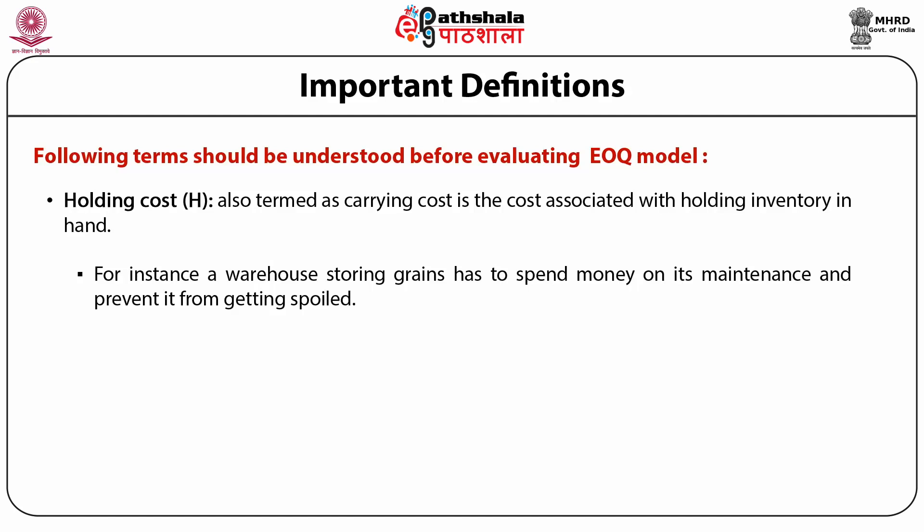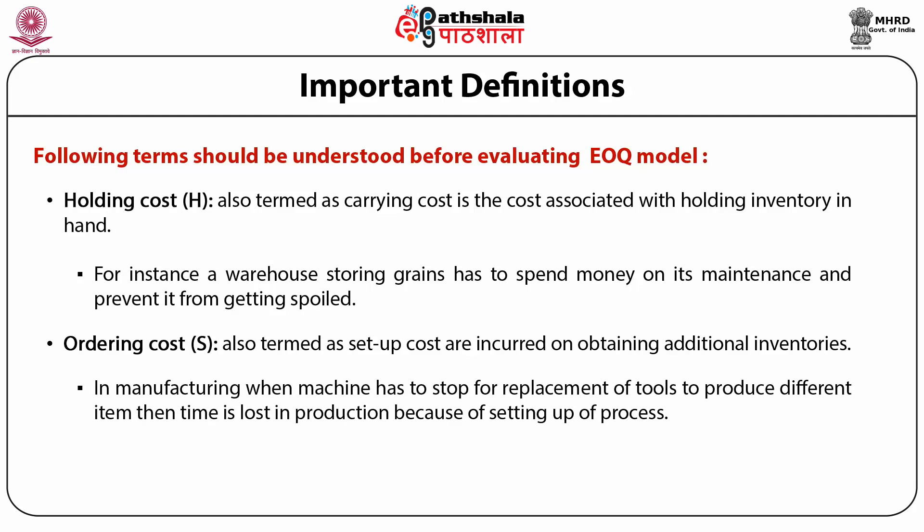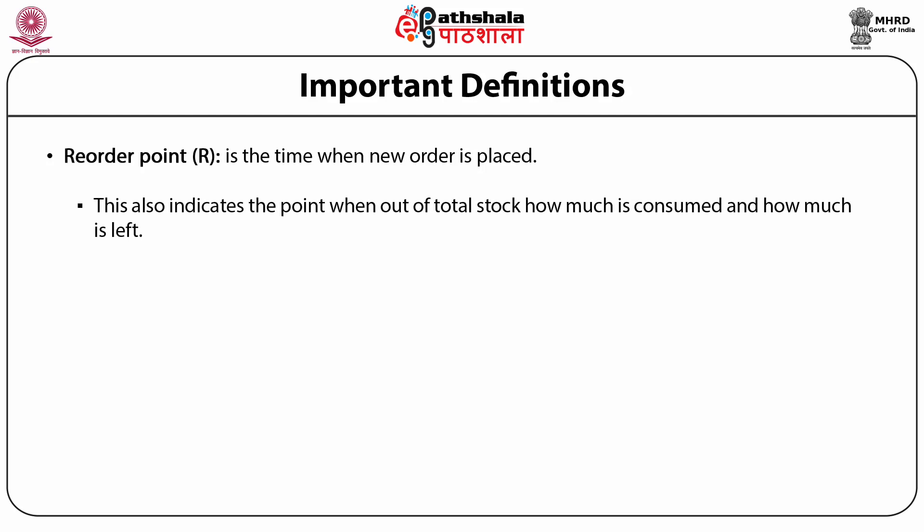Ordering cost, also termed as setup cost, is incurred on obtaining additional inventories. They include cost of communicating a new order, transportation costs, etc. In manufacturing, when a machine has to stop for replacement of tools to produce different items, time is lost in production due to setting up of the process — that is why this cost is also called setup cost. Reorder point is the time when a new order is placed, indicating how much stock has been consumed and how much is left.